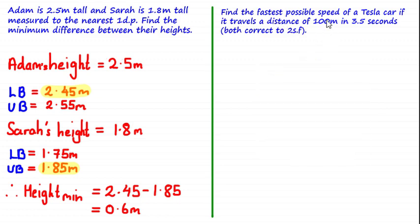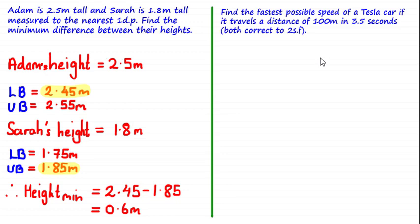We've been asked to find the fastest possible speed of a Tesla car, given that it travels a distance of 100 meters in 3.5 seconds — which is lightning fast. Both values have been rounded to the nearest two significant figures. You can imagine Elon Musk and his team running various tests to see how fast these models can go in the shortest space of time — so let's see how he might calculate this.